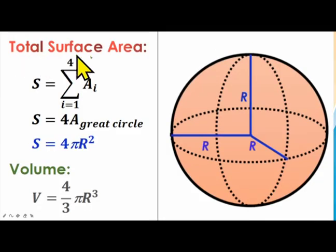The surface area of a sphere is equal to the sum of the areas of four of its great circles. That is, the surface area S equals the summation of A_i where i goes from 1 to 4, and A_i is the area of the ith great circle. Since all the great circles are congruent, S equals four times the area of a great circle. Now, being a circle, the area of one great circle is πr², where r is the radius.